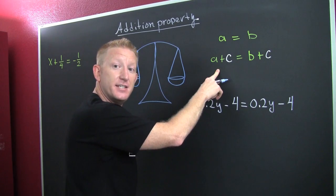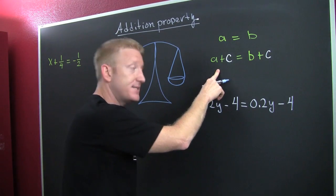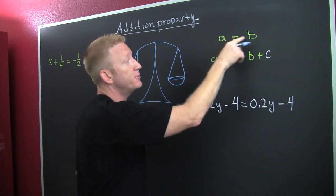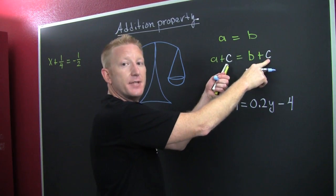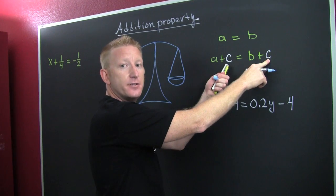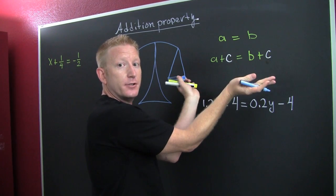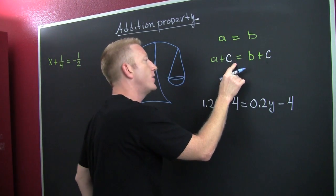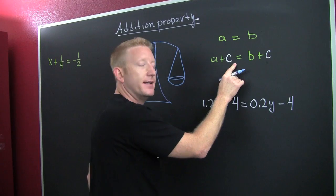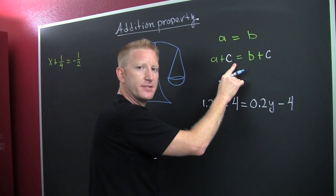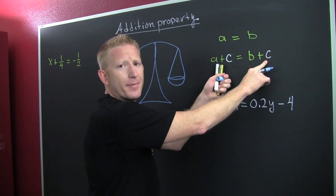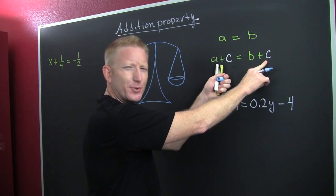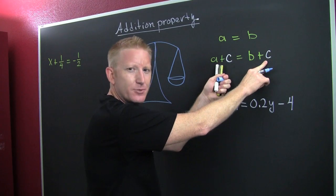That's exactly what the addition property says: if you have two things being equal, you can add the same thing to both sides and they're still going to be equal. We could also add the opposite of something, which represents subtraction, and it would work out the same.